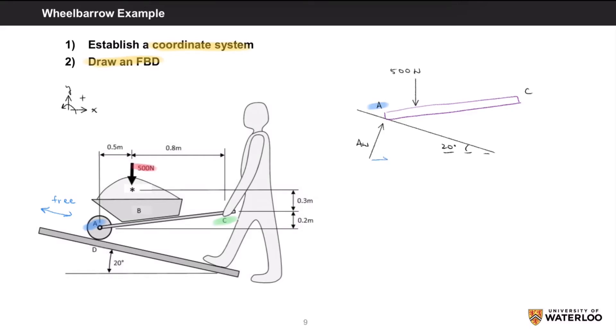Since AN is acting at an angle, we can then break it down further into its X and Y components. So we'll get AN times sine of 20 degrees for the X component, and AN times cosine of 20 degrees for the Y component.